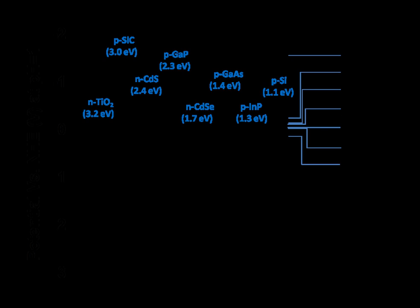This introduces a downward band bending in an N-type semiconductor liquid junction and upward band bending in a P-type semiconductor liquid junction. This characteristic of the semiconductor-liquid junction is similar to a rectifying semiconductor-metal junction, or Schottky junction.